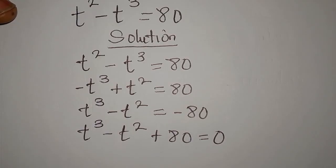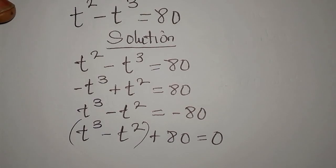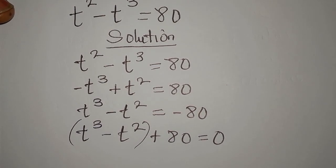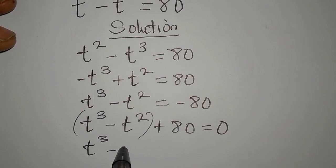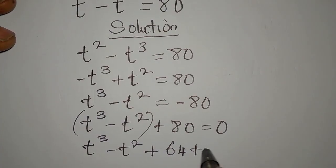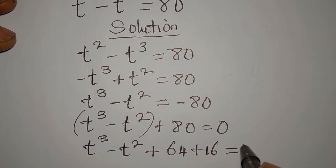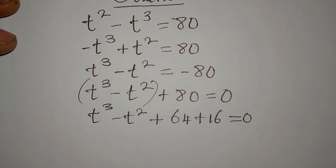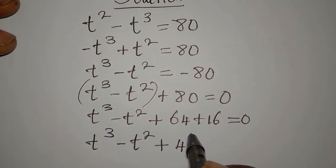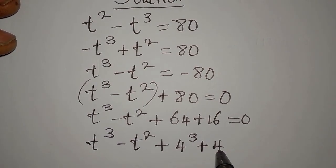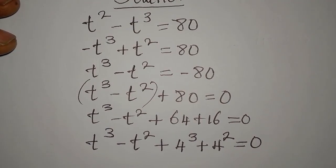Now let's see if we can write 80 in a useful form. I'll break this 80 so that it can appear in a factorable form. t cubed minus t squared plus 80 is the same as 64 plus 16, which equals 80. So we have t cubed minus t squared plus 64 — which is the same as 4 to the power of 3 — plus 16, which is 4 to the power of 2, equals zero.